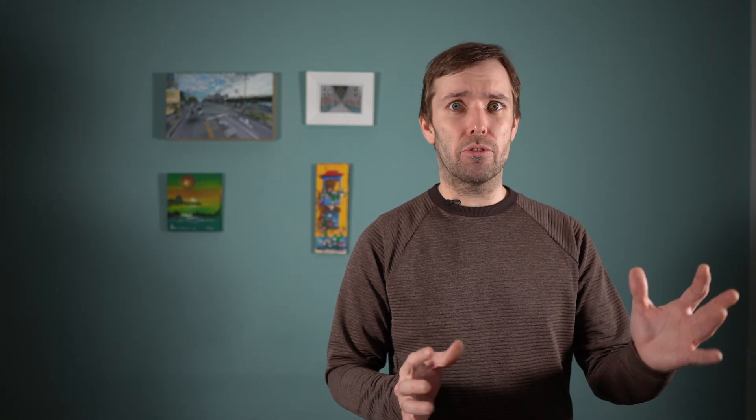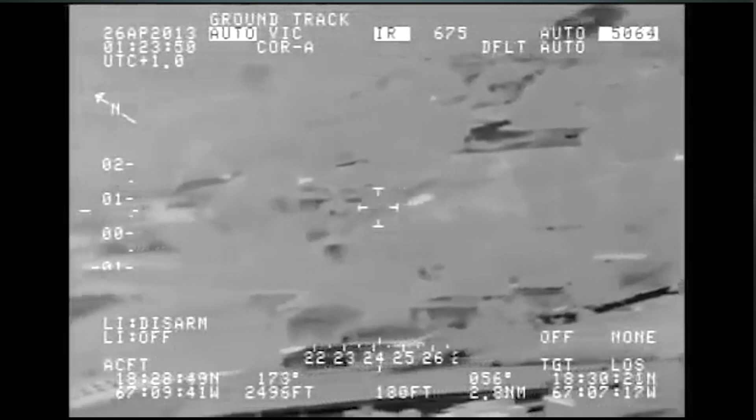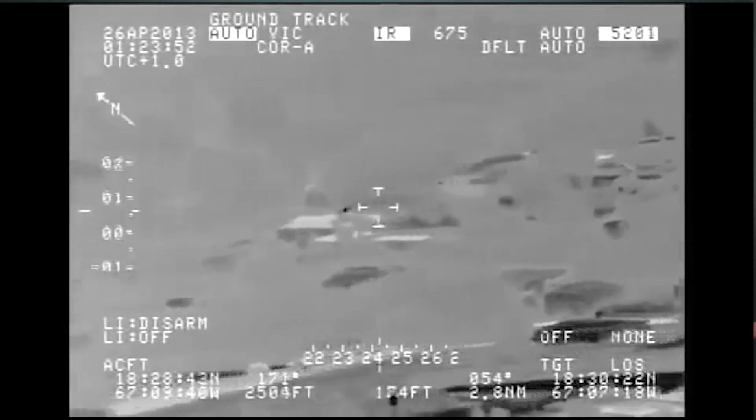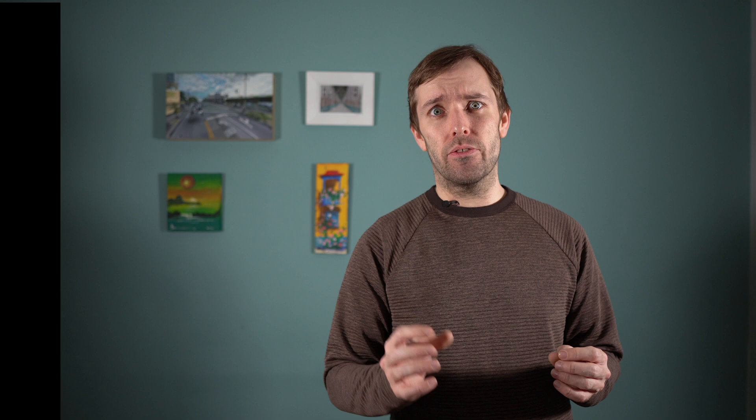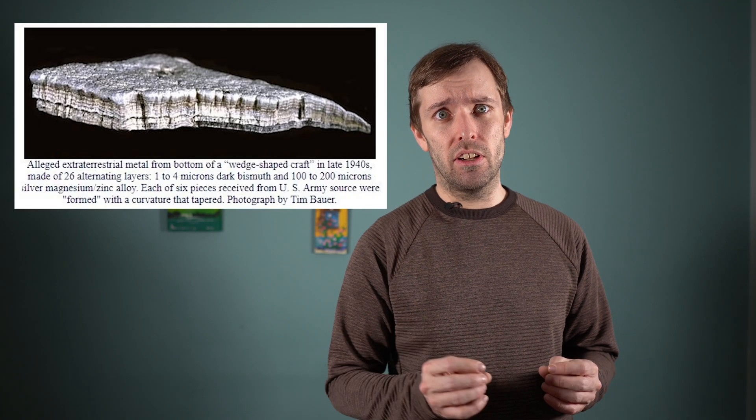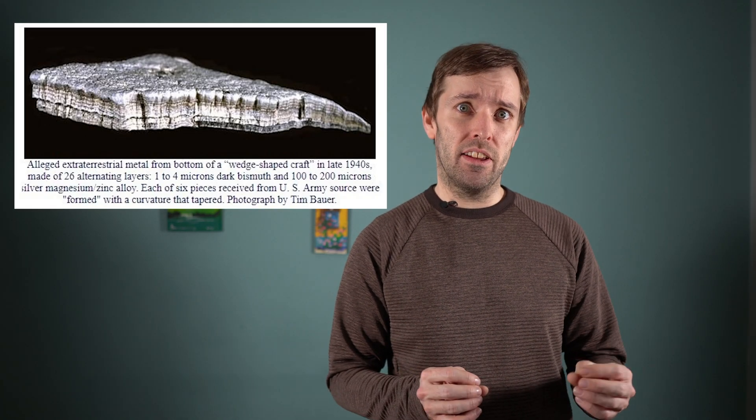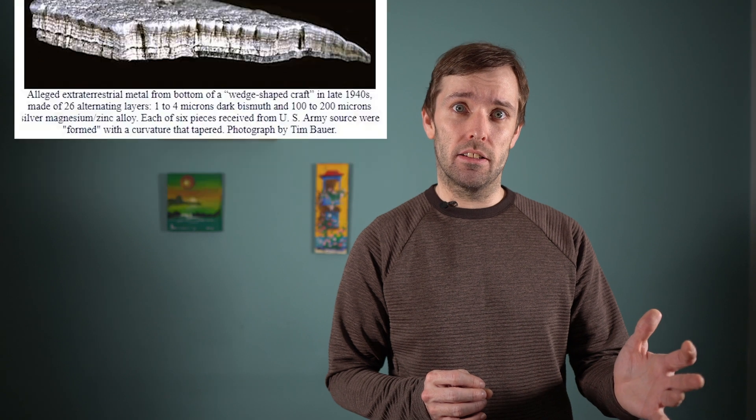We might see such probes as orbs of light moving in our dimensions with impunity. Such entities might even manifest physical objects in our dimensions, turning energy into matter with E equals MC squared. You can really run wild with this theory.